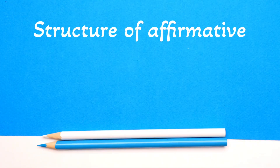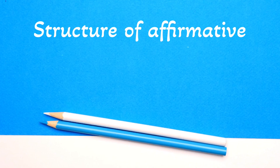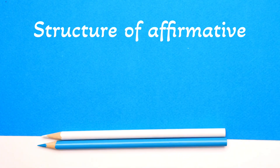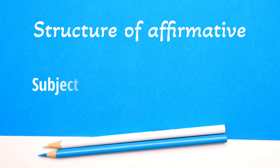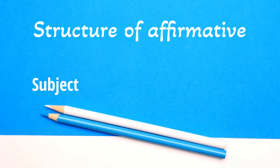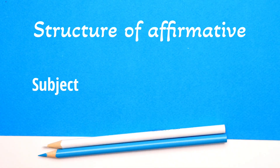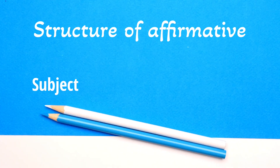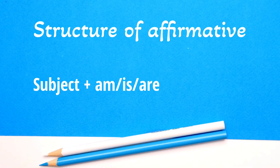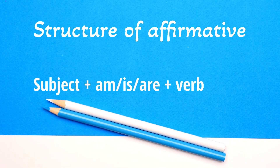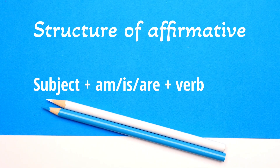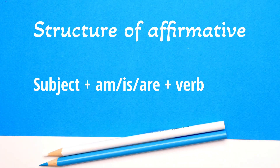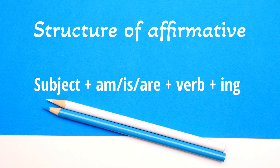To make affirmative sentences in the present continuous, we use the subject followed by the appropriate form of the auxiliary verb 'to be' and the main verb in present participle, to which we add -ing.